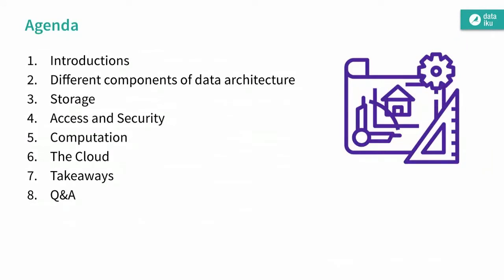So just a quick rundown of the agenda for the webinar, and then we'll get started. We've done the introductions already. First, we're going to talk about different components that make up a data architecture, and then go into some of the key considerations — looking at storage, access, and security, computation. We'll talk a little bit about distributed computing in the cloud before wrapping up with some takeaways and time for questions at the end. You're free to ask questions using BrightTalk throughout the presentation, but we will get to those at the end.